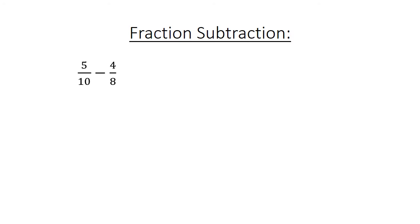Fraction subtraction: 5 over 10 minus 4 over 8 equals 20 over 40. We find the lowest common multiple, minus 20 over 40 equals 0.